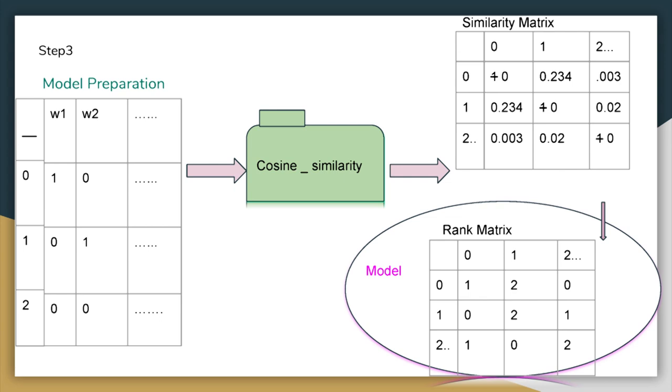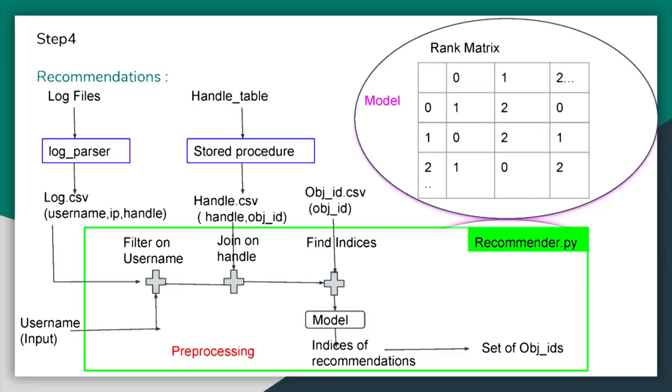Whenever we want to recommend a particular item related to a particular item, we will go into that similarity matrix. We will fetch some of the items related to that specific item which are having the highest similarity measures. For that again we are transforming this similarity matrix to the rank matrix so that there is no need to search every time whenever we want to recommend a few items. Now we are having the model.